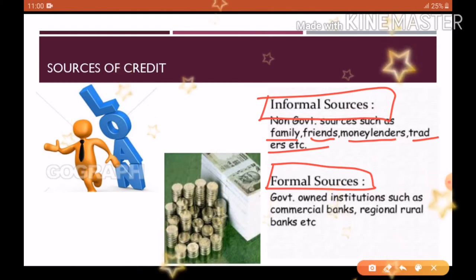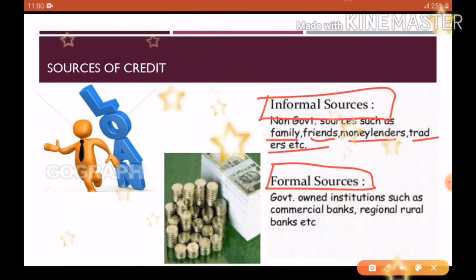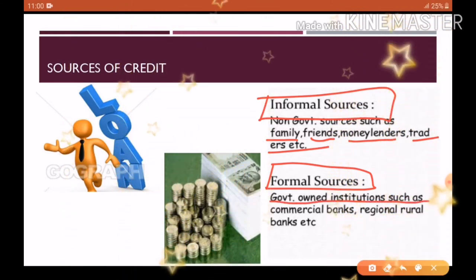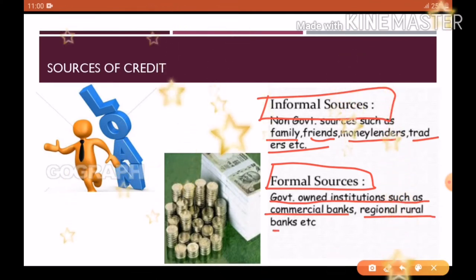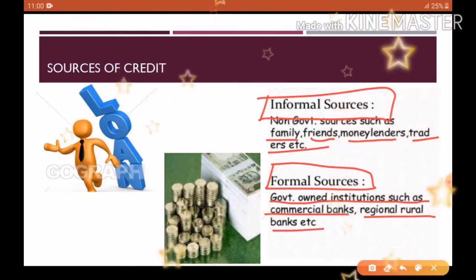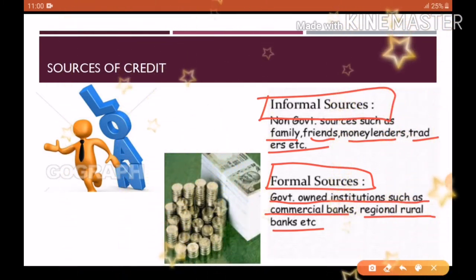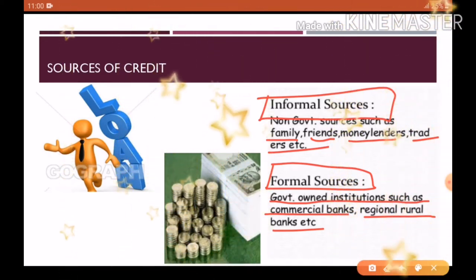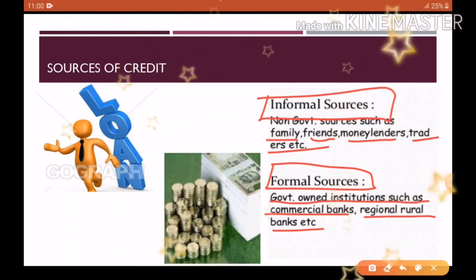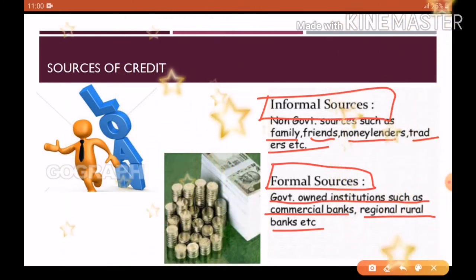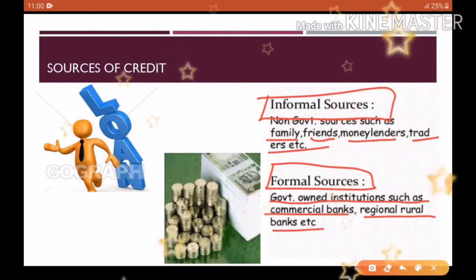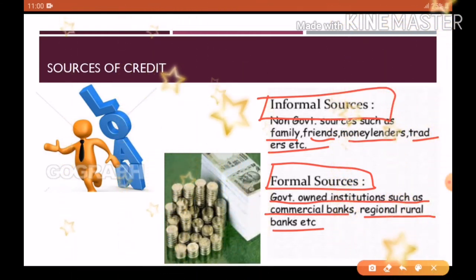Formal sources में government-owned institutions आते हैं जैसे commercial banks, regional rural banks, या self-help groups। एक important बात — formal sources से लिया गया credit, informal sources की तुलना में काफी सस्ता होता है, क्योंकि formal sources की interest rate RBI द्वारा तय की जाती है, जो कि informal sources की comparison में काफी कम होती है।